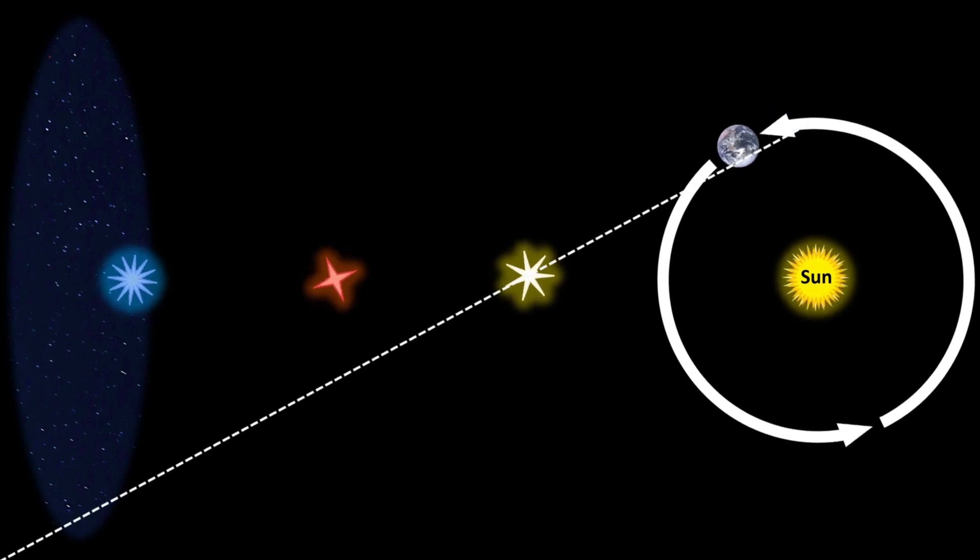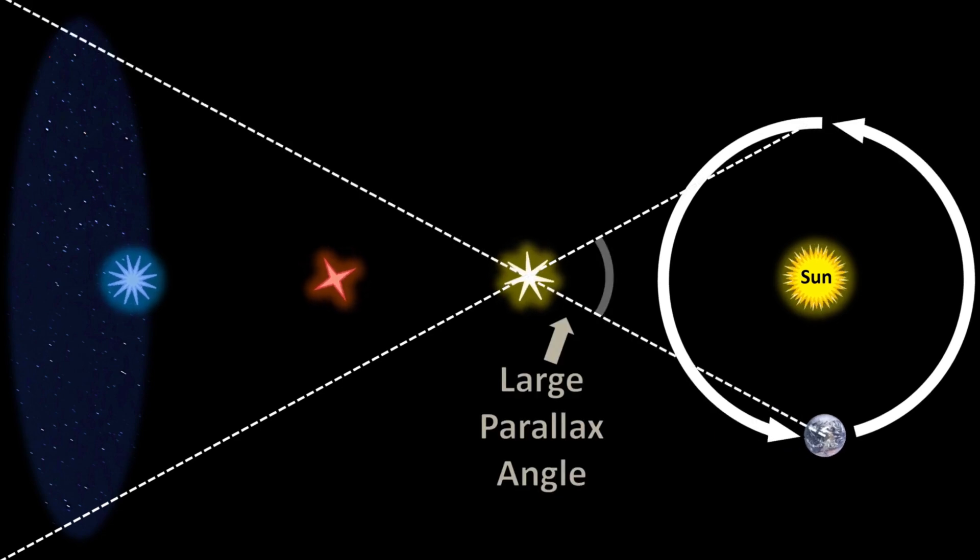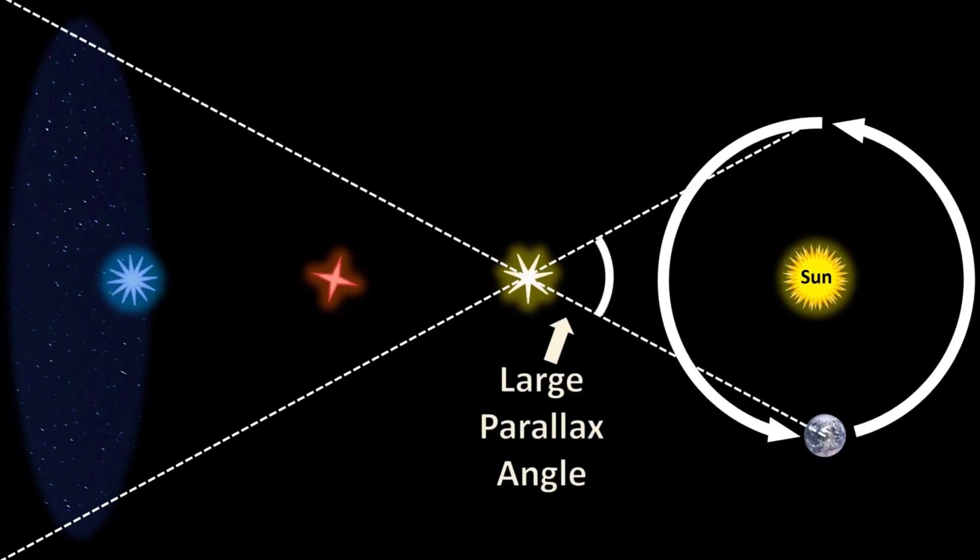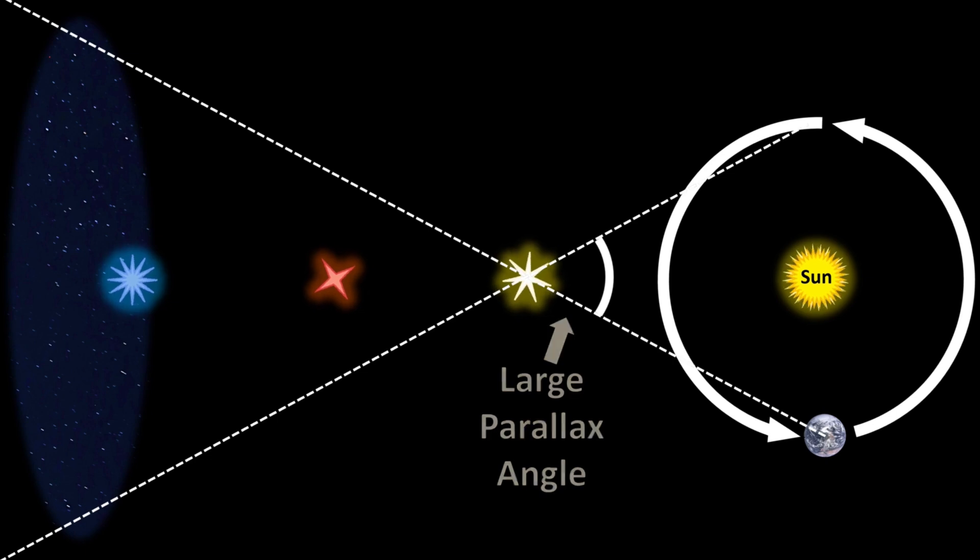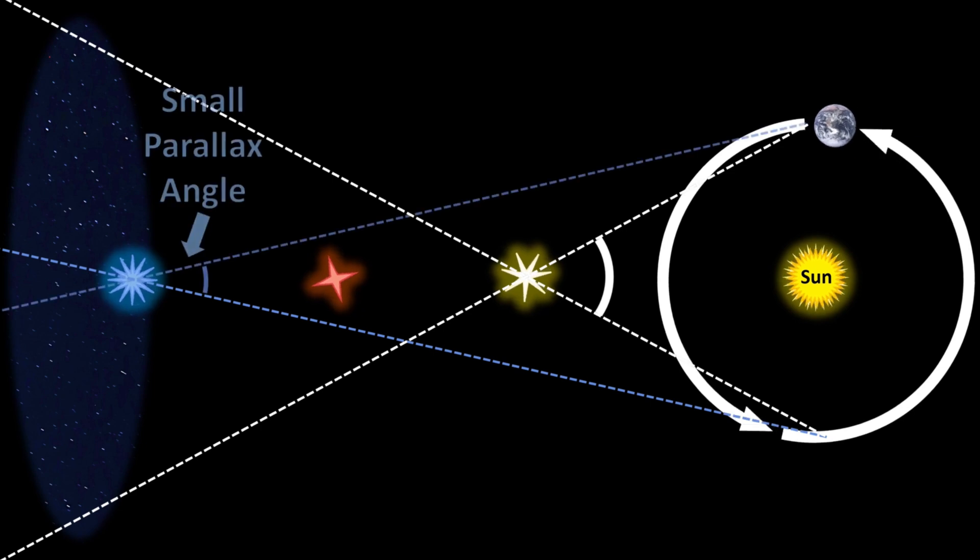Since our view of the closest star changes angle the most from one end of our orbit to the other, we measure a large parallax angle. But because the farthest star, the blue star, that angle doesn't change as much, we measure a smaller parallax angle.